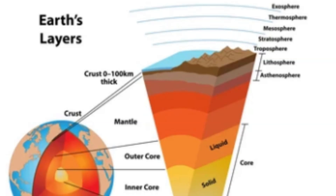The thickness of continental crust varies widely but generally ranges from about 20–70 km. In areas of mountain building or crustal thickening, such as mountain ranges like the Himalayas, the continental crust can be much thicker, reaching depths of up to 70 km or more. Conversely, in stable continental regions, the crust may be thinner, closer to the lower end of the range.